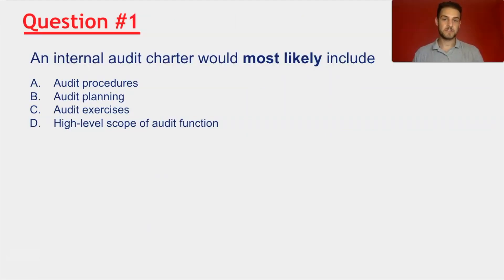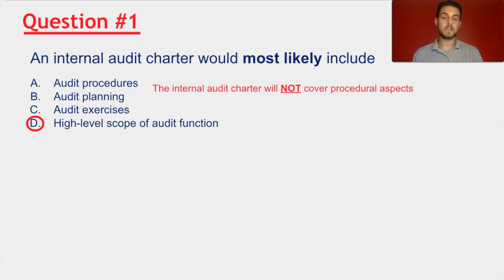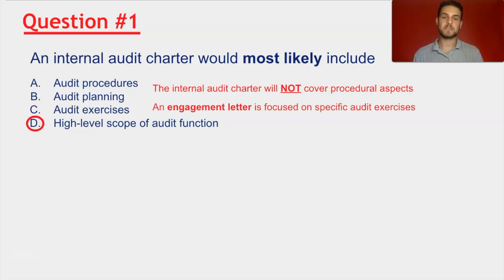Jumping straight into the questions to prepare you for the CISA exam. Question number one: an internal audit charter would most likely include... Think back to the definition of an internal audit charter. D is the correct answer: high-level scope of audit function. That is one of the three main characteristics. The first two options are incorrect because the internal audit charter will not cover procedural aspects, which include specific tasks related to the audit. Choice C is not correct because an engagement letter is focused on specific audit exercises, not an internal audit charter.